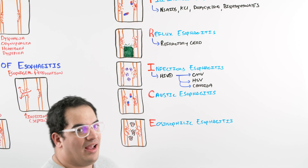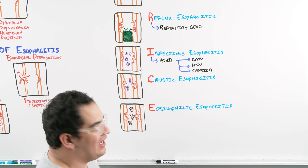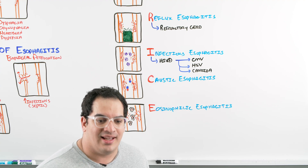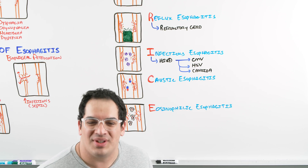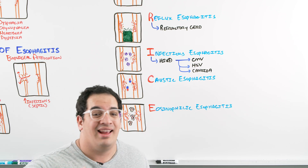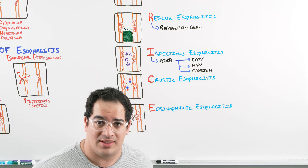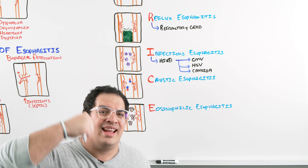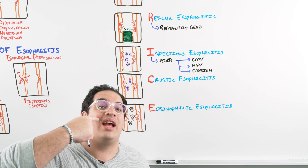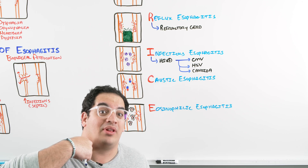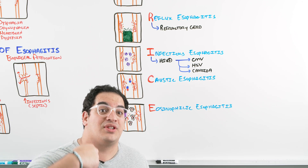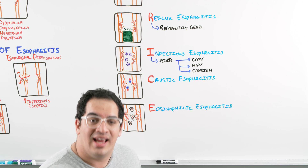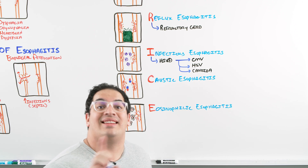Caustic esophagitis absolutely terrifies me — these patients can get super sick. This usually occurs as a suicide attempt, where the patient drinks a strong acid or strong base, causing massive necrosis and eschars of the esophagus. Because they're drinking it, it burns up the oral cavity, pharynx, and larynx, potentially getting into the airway. Watch out for oral burns, drooling, and stridor.